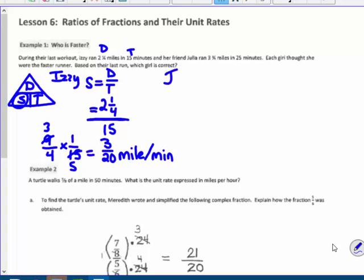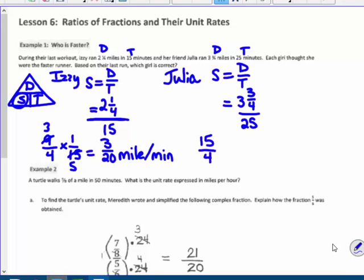Julia, on the other hand, same process, distance divided by time. Her speed, I mean her distance, is 3¾ miles divided by her time of 25 minutes. So, 3¾ is equal to 15/4 divided by 25 over 1.